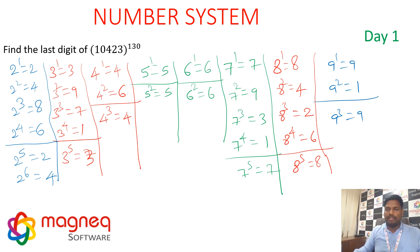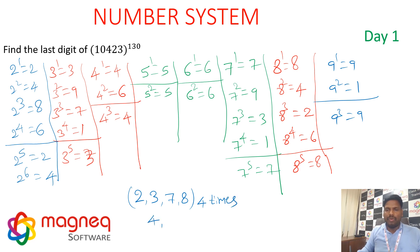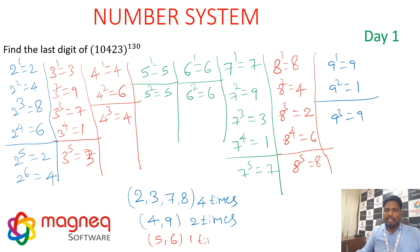Summary of cyclicity: digits 2, 3, 7, and 8 — repetition after 4 powers. Digits 4 and 9 — repetition after 2 powers. Digits 5 and 6 — always end with the same digit (cycle of 1).